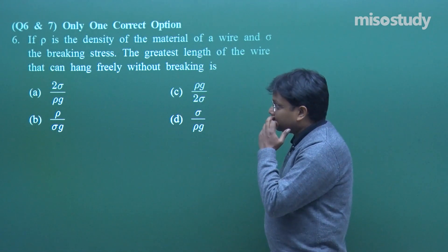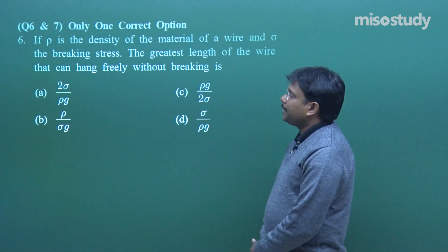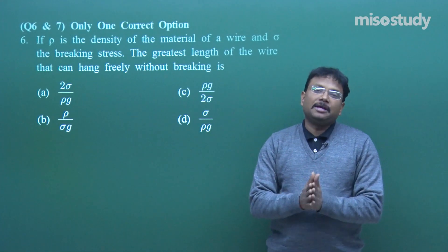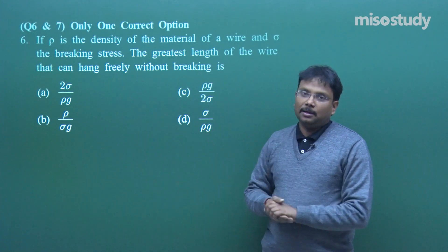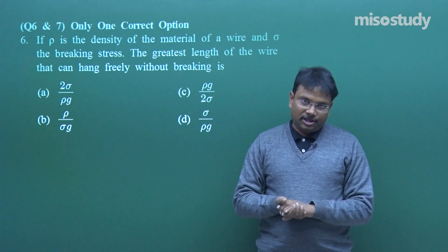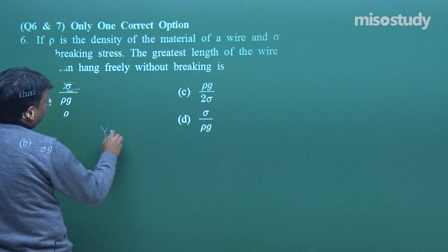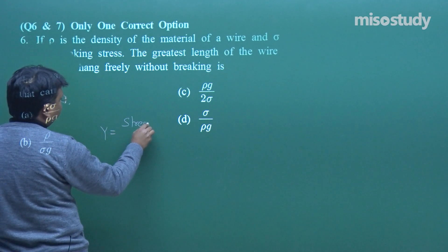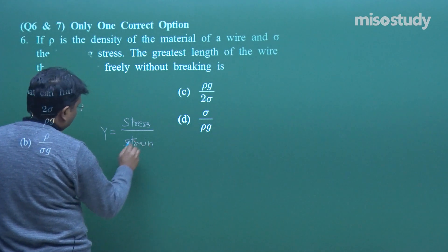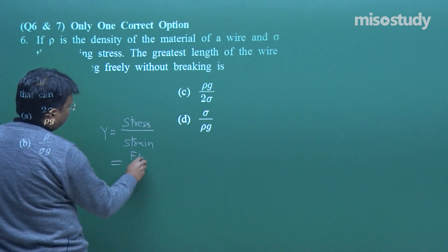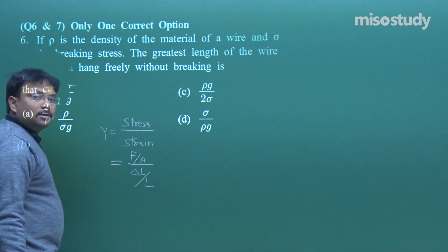Alright, let's work out this one. If rho is the density of material of a wire and sigma is the breaking stress - see, in this question things are absolutely fundamental. What has been done is a fancy dress competition has been put together. Normally if you look, you write the formula: stress upon strain, which you elaborate as force upon area upon change in length upon initial length.